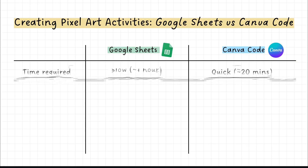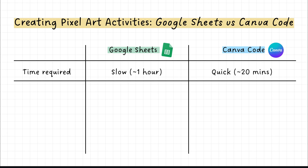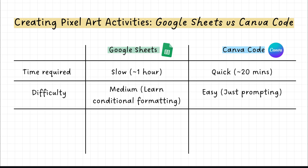Let's compare Google Sheets and Canva Code. First, time required: for Sheets it's quite slow — I'd give myself about an hour to create it, including making the questions, answers, pixel art, and conditional formatting. For Canva Code it's quite quick — you just need a prompt and probably a couple of re-prompts to fix functionality and appearance issues, then publish and send. Next, level of difficulty: Google Sheets is medium because you need to learn formulas and conditional formatting. Canva Code is easy — you just need to have a go at prompting.